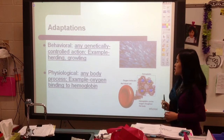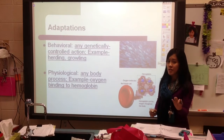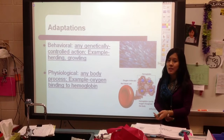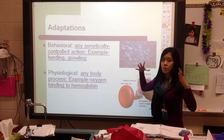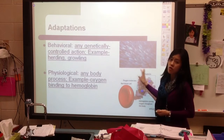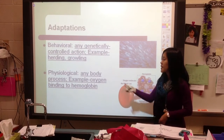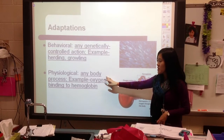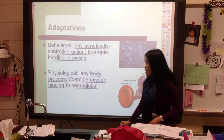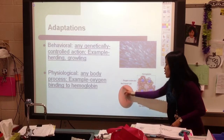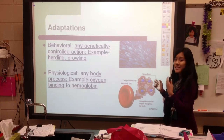The second type is behavioral adaptations. Some of these are genetic traits — especially in wild animals, certain behaviors are genetic, like herding in antelope, schooling in fish, or growling. Animals automatically know how to do these things. Then there are physiological adaptations, which are body processes. An example is oxygen binding to hemoglobin in your red blood cells — your red blood cells carrying oxygen around your body is an adaptation, because not every organism has blood that can carry oxygen the way we do.